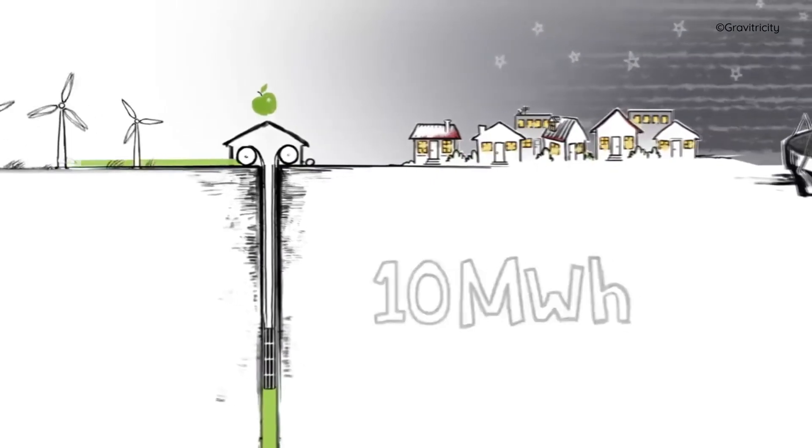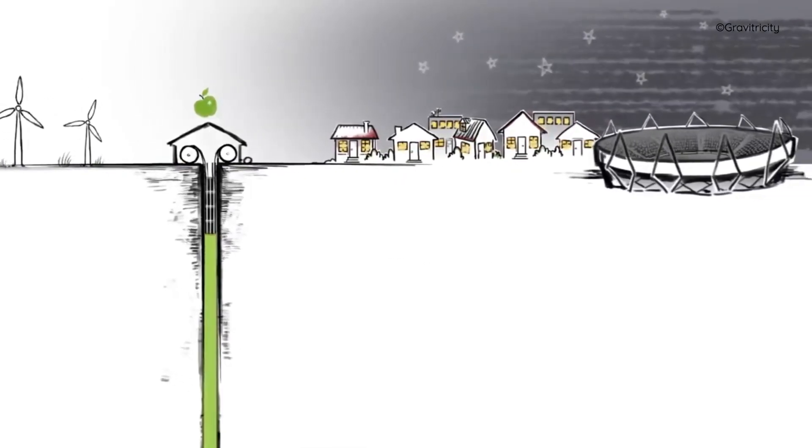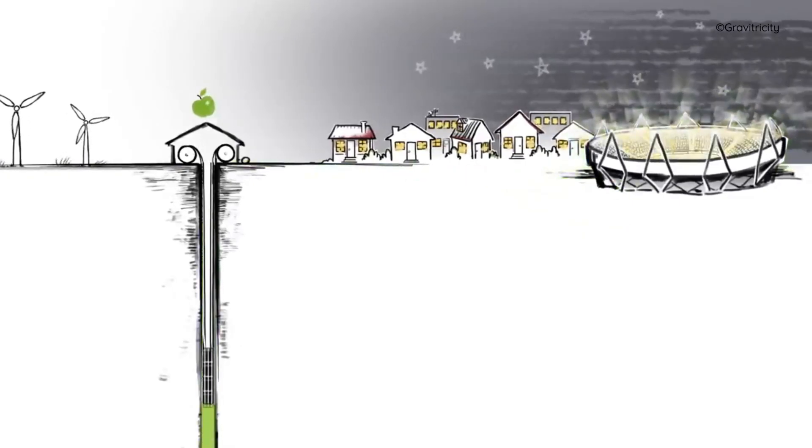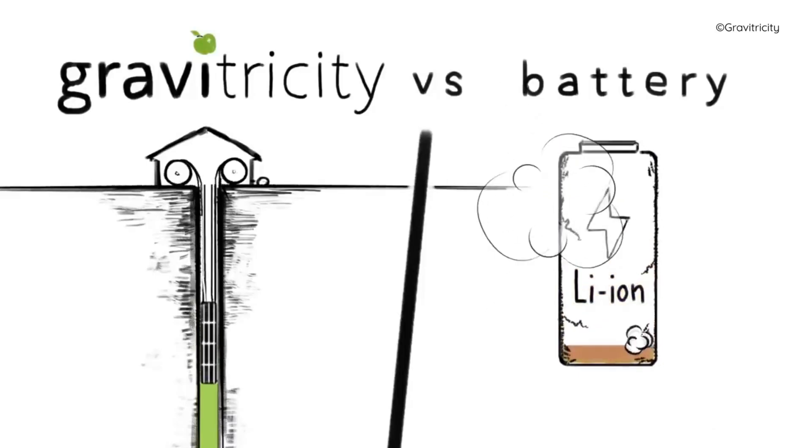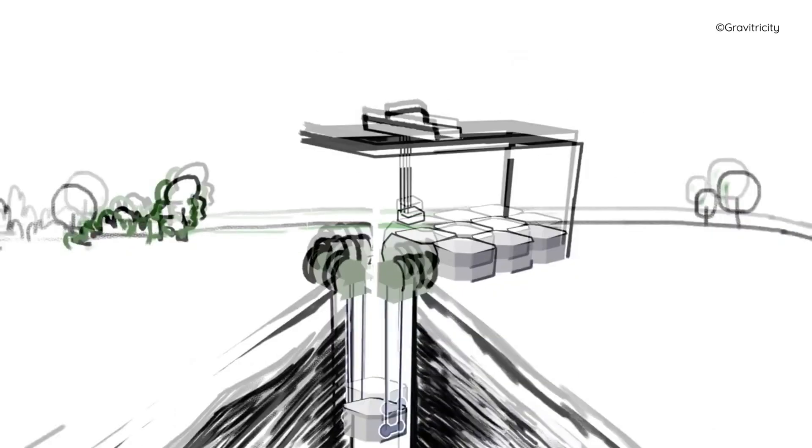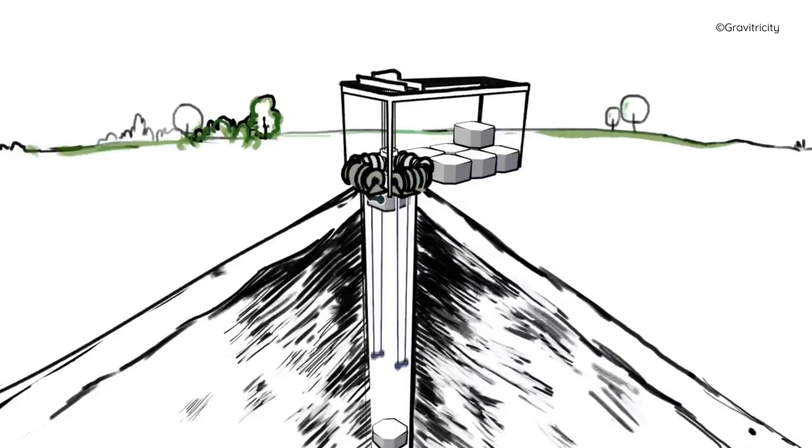During the discharging phase, the storage medium is released and falls down under the force of gravity. The generator then converts the kinetic energy of the falling object into electricity and feeds it back to the grid or to the load. This process converts gravitational potential energy back into electrical energy.